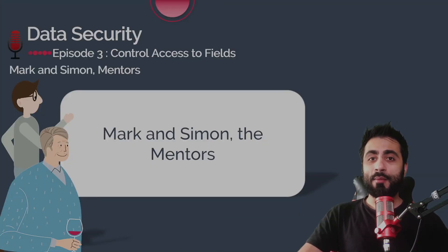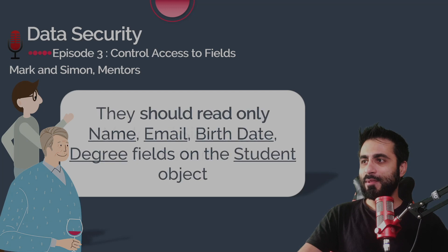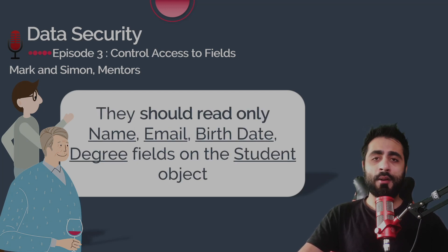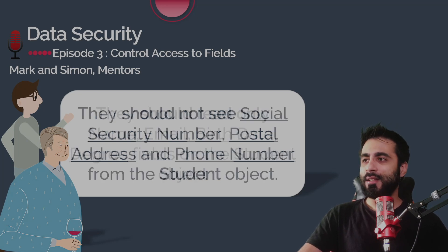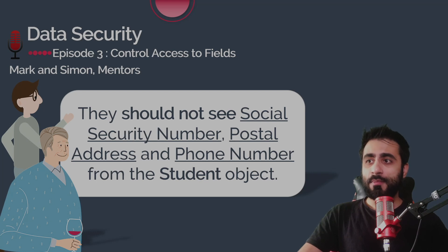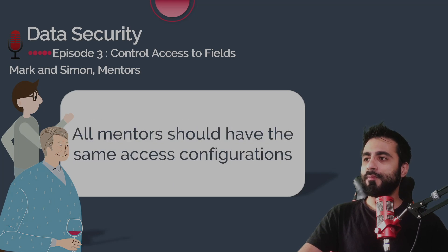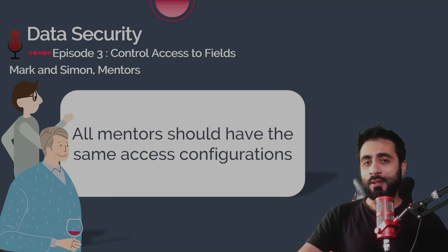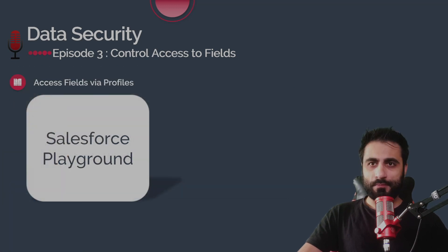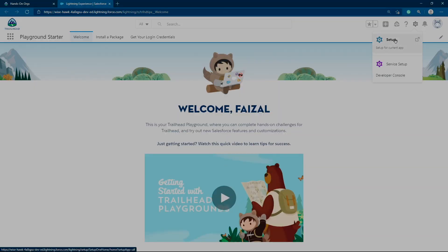Mark and Simon are both mentors. They should have read-only access to the following fields on the Student object: Name, Email, Birth Date, and Degrees. They should not see Social Security Number, Postal Address, or Phone Number from the Student object. Since all mentors should have the same access configuration, we'll use the mentor profile for this.